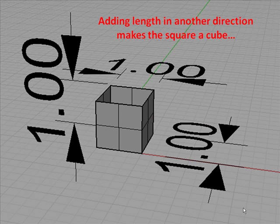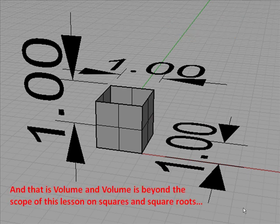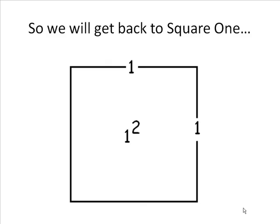Adding length in another direction makes the square a cube, but that is volume, and volume is beyond the scope of this lesson on squares and square roots.